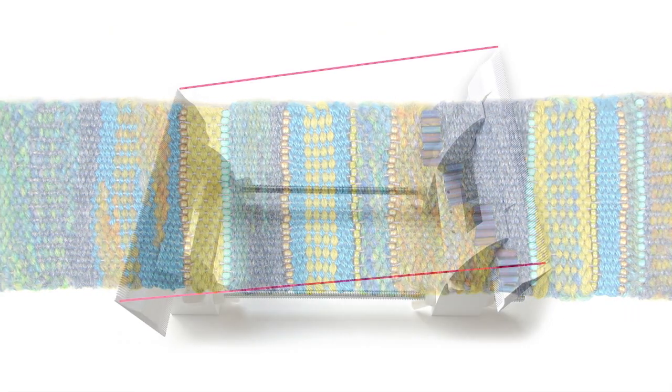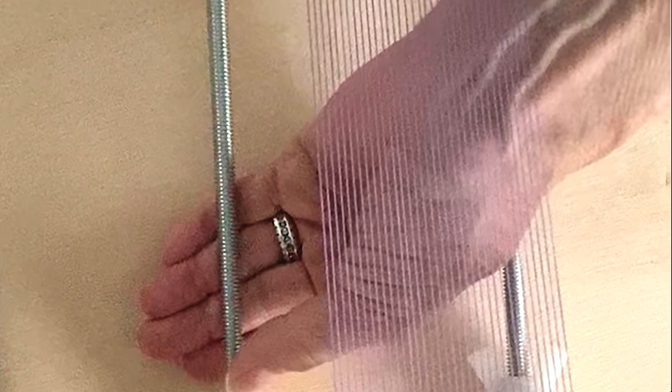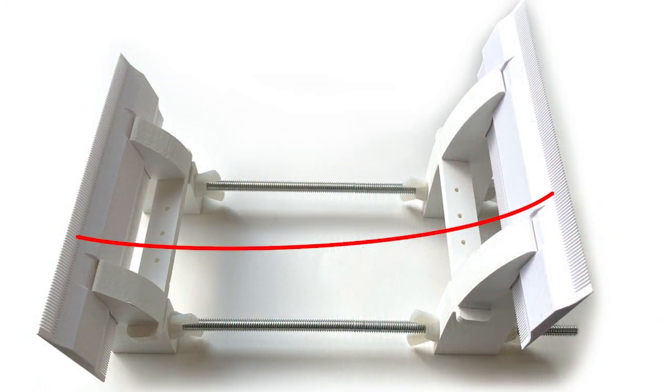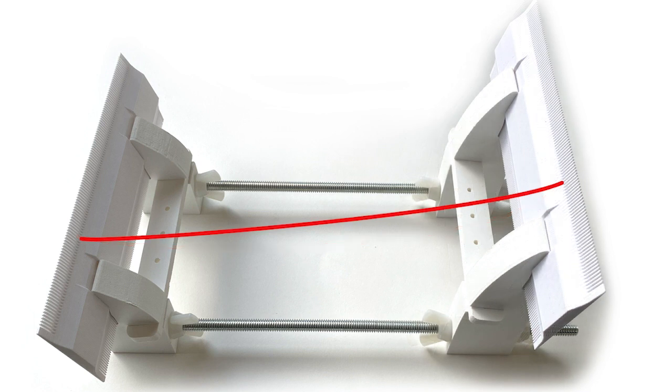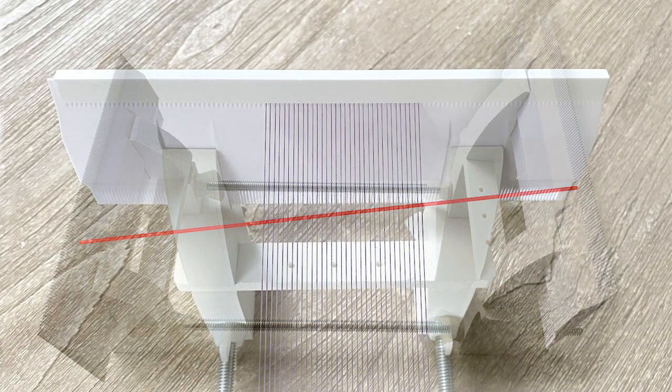This tabletop loom is slanted for neck comfort and has an open construction so you can easily reach under your work. You can create a nice working tension in your warp by adjusting the position of the outer comb. And when the warp is fully in place, there are covers to prevent slippage and to minimize thread snagging.